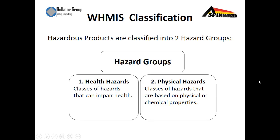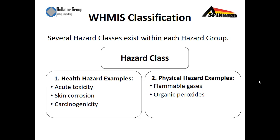Hazardous products are classified into two hazard groups: health hazards — classes of hazards that can impair human health — or physical hazards — classes of hazards that are based on physical or chemical properties.